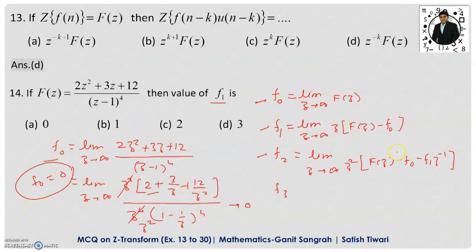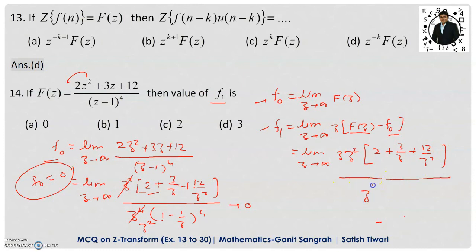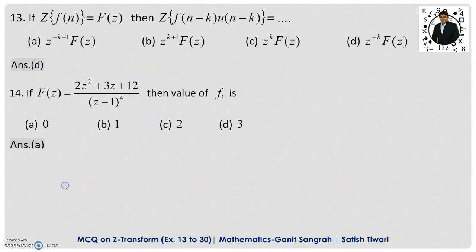Now finding f(1): f(1) = limit z→∞ of z·[F(z) − f(0)]. Since f(0) = 0, we put F(z) = (2z² + 3z + 12)/(z−1)⁴. Taking z² common from numerator and z⁴ from denominator, after cancellation we are left with (2 + 3/z + 12/z²) / [z(1−1/z)⁴]. Multiplying by z, as z→∞ this gives 2/z → 0. So f(1) = 0, and option A is correct.